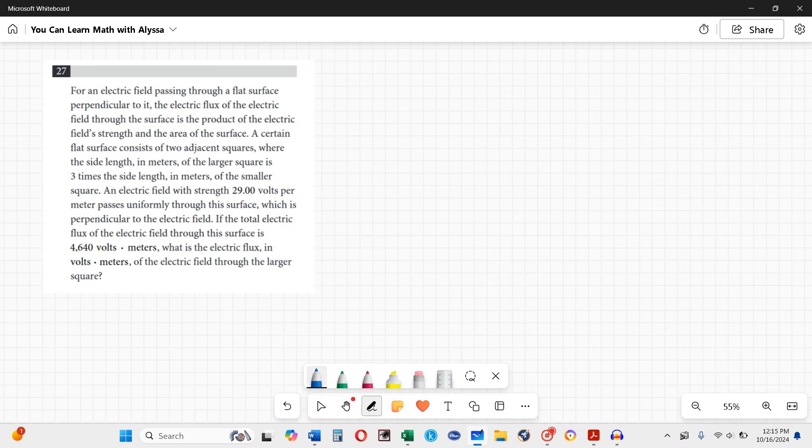The electric flux of the electric field to the surface is the product of the electric field strength and the area of the surface. A certain flat surface consists of two adjacent squares where the side length in meters of the larger square is three times the side length in meters of the smaller square. An electric field with strength 29 volts per meter passes uniformly through the surface which is perpendicular to the electric field. If the total electric flux of the electric field through the surface is 4640 volt-meters, what is the electric flux in volt-meters of the electric field through the larger square?